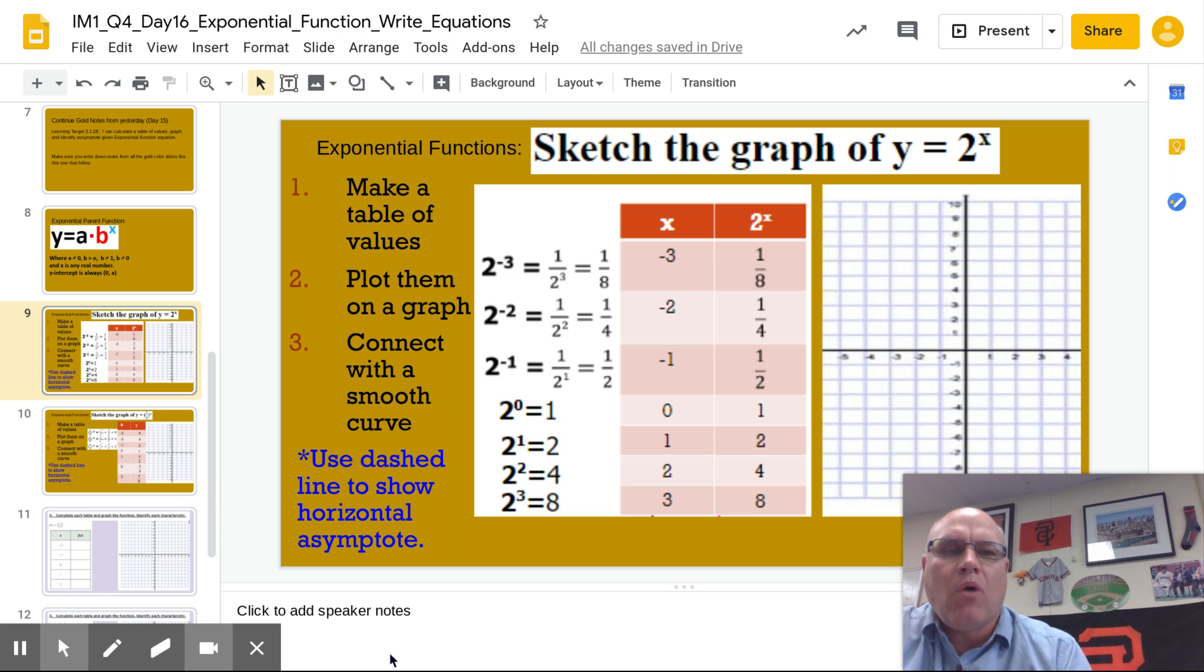Remember, this is in the form y equals a times b to the x. So in this case, our a value is actually 1. We don't see the 1. It would be 1 times 2 to the x power. So first thing we do is what we did yesterday. We have to evaluate the function for different values of x.